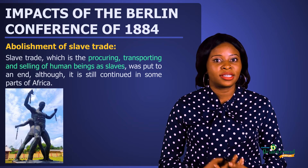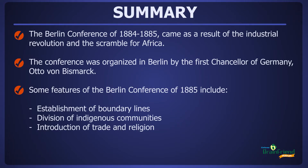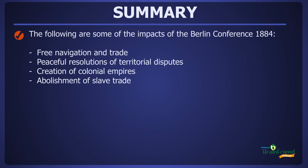This brings us to the end of today's lesson. Let's take a quick summary. We learned that the Berlin Conference of 1884 to 1885 came as a result of the Industrial Revolution and the Scramble for Africa. The conference was organized in Berlin by the first Chancellor of Germany, Otto von Bismarck. Features of the Berlin Conference include the establishment of boundary lines, division of indigenous communities, and introduction of trade and religion. Impacts include free navigation and trade, peaceful resolutions of territorial disputes, creation of colonial empires, and the abolishment of slave trade.